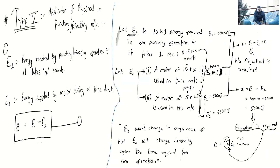Once we determine that a flywheel is needed, the next question is what mass of flywheel is required. We can determine this using the equation e = I · Cs · ω_mean², where I consists of the mass of the flywheel and the radius of gyration.